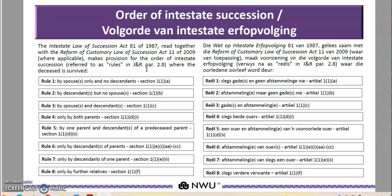Rule number one is regulated by section 1(1)(a) of the Intestate Succession Act. In the exam, when making your calculations you have to write down the rule and the relevant section. Rule number one regulates a situation where someone passes away and they leave no descendants — no children, no grandchildren — they only leave a spouse or spouses. For example, one dies and leaves only his wife.